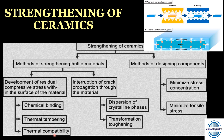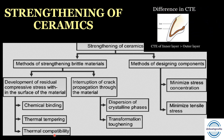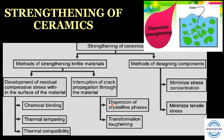Third is thermal compatibility — creating a difference in the coefficient of thermal expansion. The inner layer has a slightly higher coefficient than the outer layer, so on cooling, residual stresses are created that strengthen the glass. The second major approach is interruption of crack propagation. First method is dispersion of crystalline phases — crystalline material dispersed within the ceramic interrupts crack formation so the crack cannot pass through. Most glass-based ceramics use dispersion strengthening; examples include lithium disilicate, spinel, and zirconia.